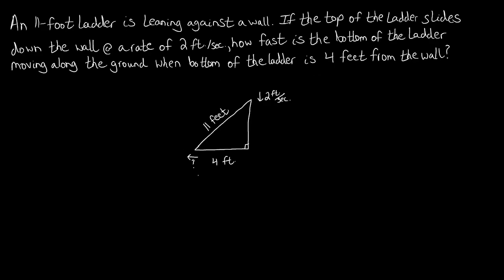What we have here is almost an instantaneous snapshot of part of this problem. The ladder being 11 feet will not ever change, and this constant rate of change of 2 feet per second is not going to change. The instantaneous snapshot is the moment when the bottom of the ladder is exactly 4 feet from the wall, and we're trying to find how fast the bottom of the ladder is moving along the ground at this point.